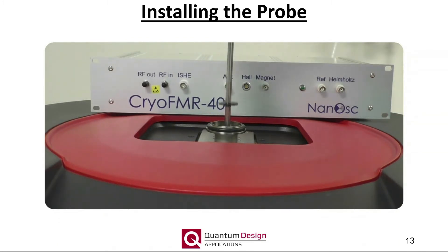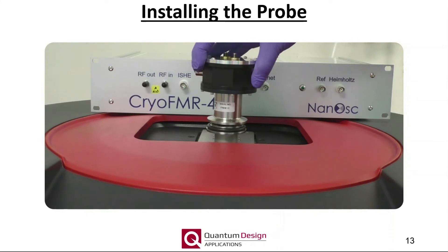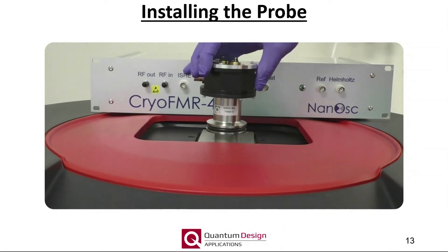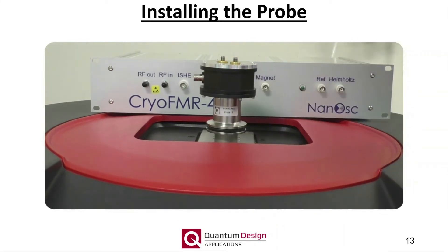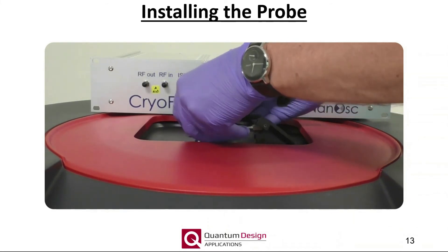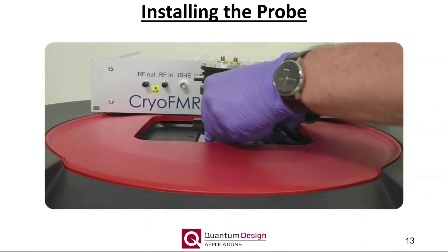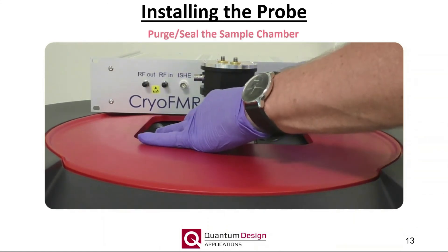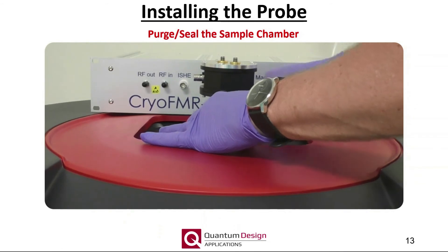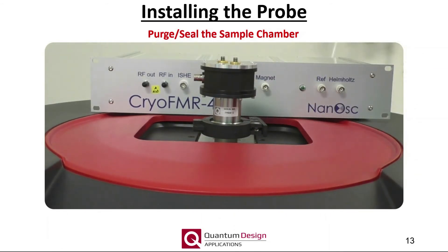As with a standard measurement puck, rotate the probe until the key engages, and press down to fully engage the sample chamber wiring. Once in place, clamp the probe. Once installed, it is best to immediately purge and seal the sample chamber. Keep an eye on the sample chamber pressure to ensure that there are no leaks.